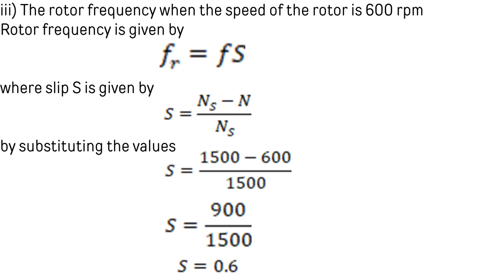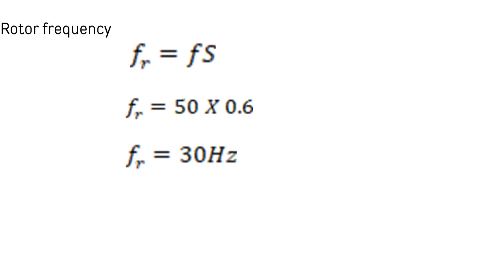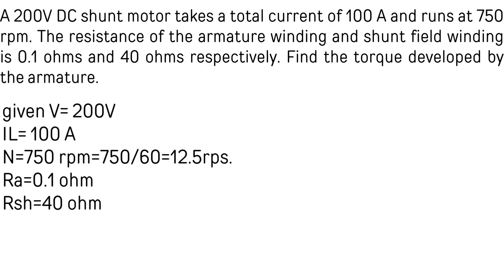To find the rotor frequency at rotor speed 600 rpm: fr = f × s, where s = (Ns - N) / Ns. Substituting: s = (1500 - 600) / 1500 = 0.6. Therefore, rotor frequency fr = 50 × 0.6 = 30 Hz, which is the frequency of rotor currents.